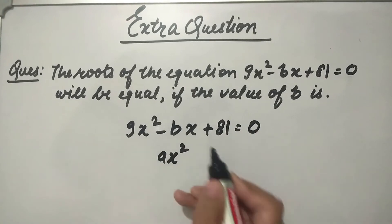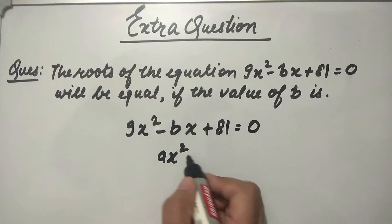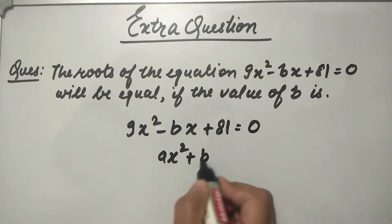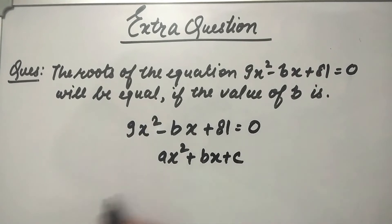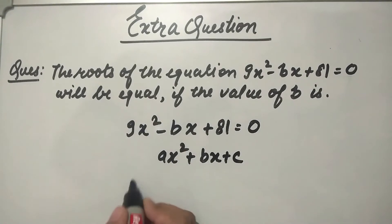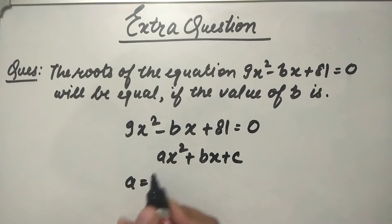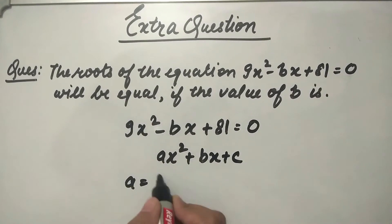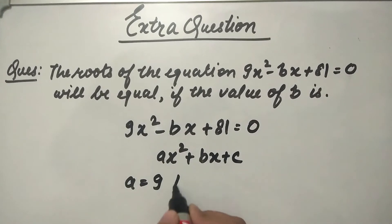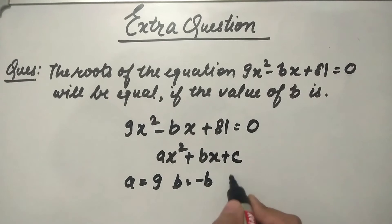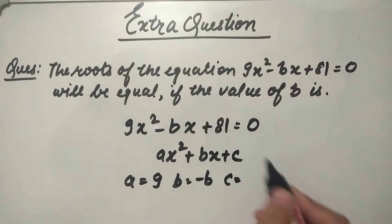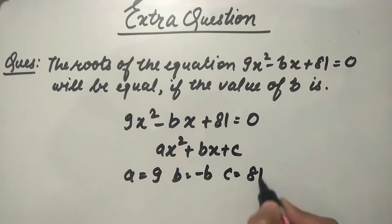The general equation is ax² + bx + c. So comparing with our equation, the value of a here will be 9, b is -b, and c is 81.